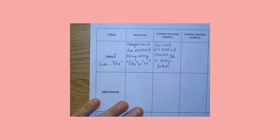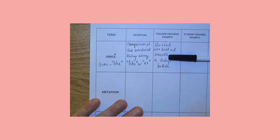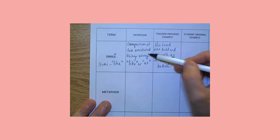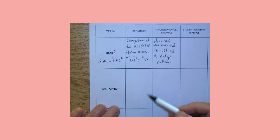We can replace that word with like. Watch. I'm just going to cover it up and say like instead. His head was bald and smooth like a baby's bottom. Either way, it's a simile. So there's my teacher example. There's the definition of simile. Let's move on to metaphor.